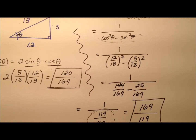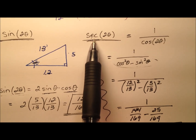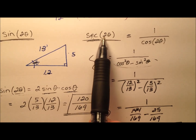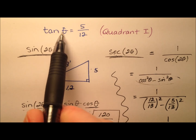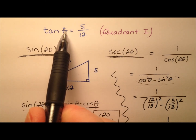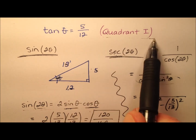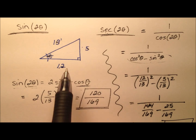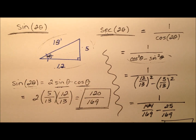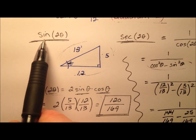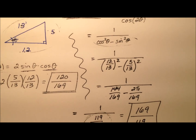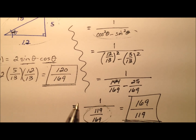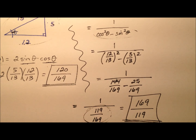This ratio, 169 over 119, is the value for secant of twice theta, given that the tangent of the angle is 5 twelfths and it's in the first quadrant. I was able to build a nice reference triangle, and I found the sine of 2 theta and the secant of 2 theta. Those two values are 120 over 169 and 169 over 119, respectively.